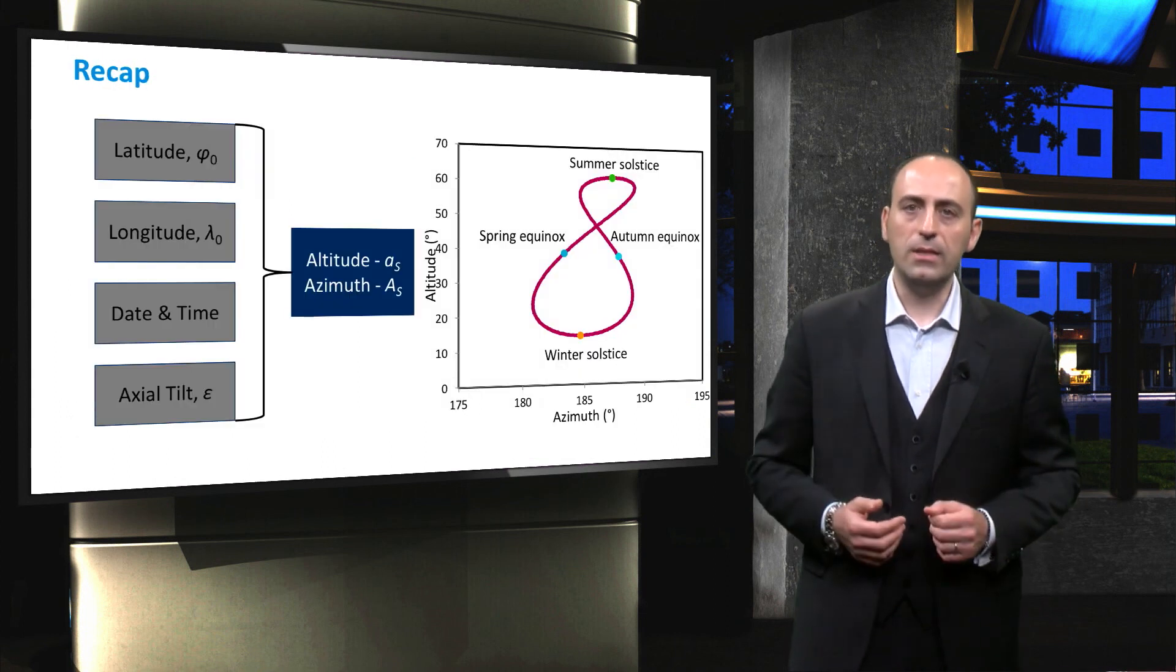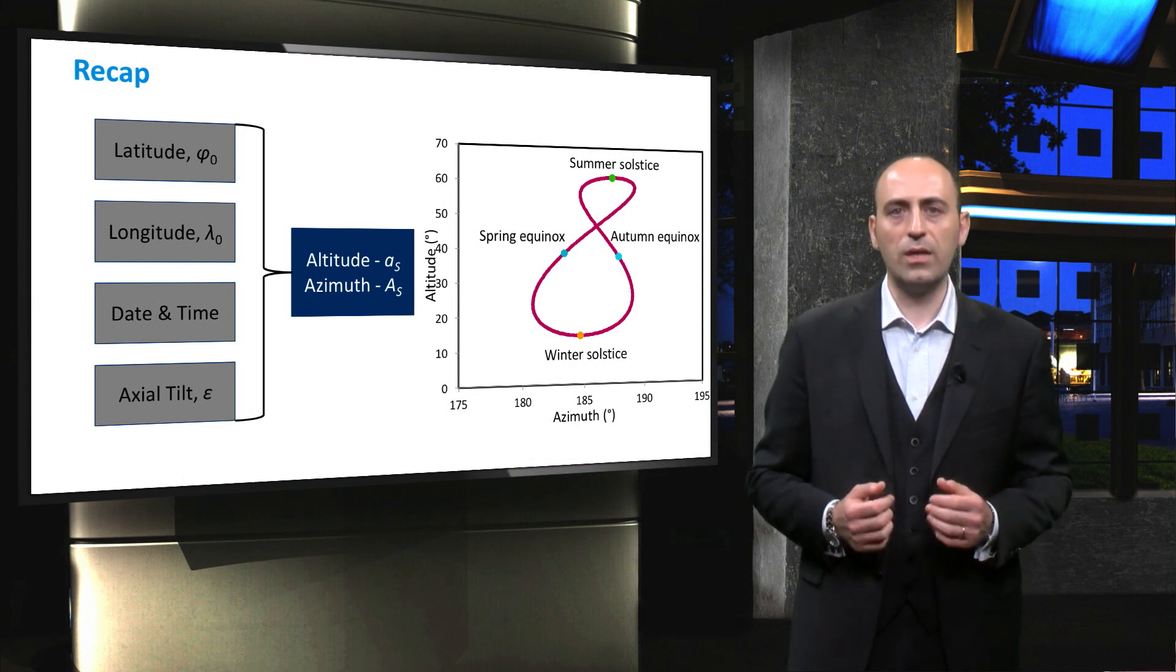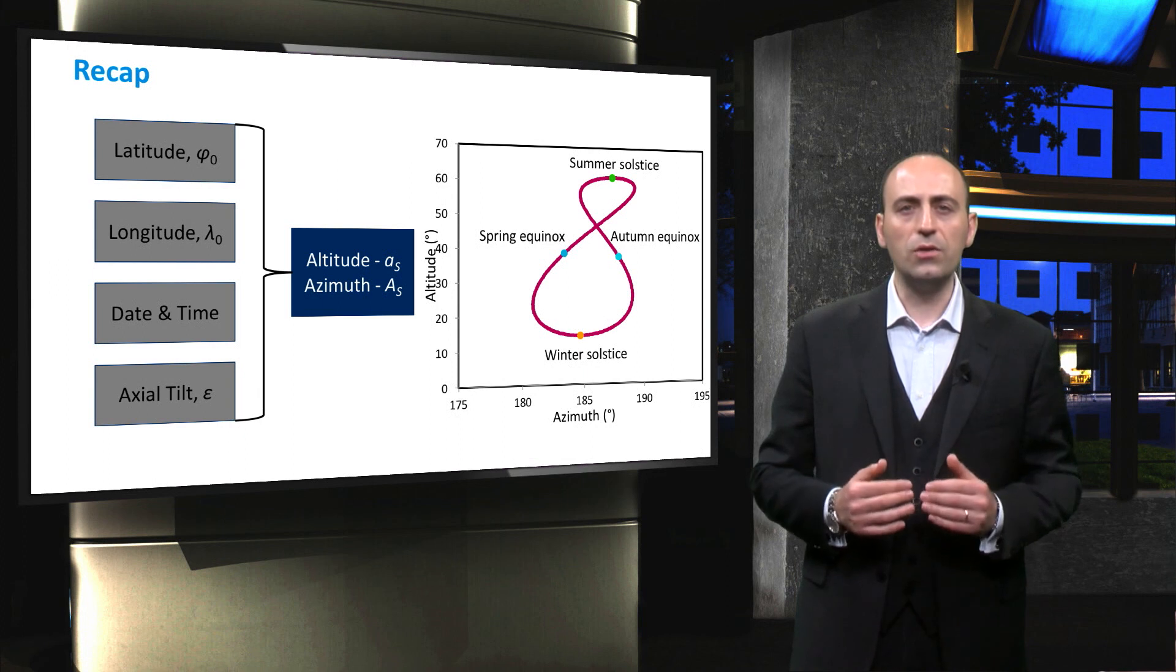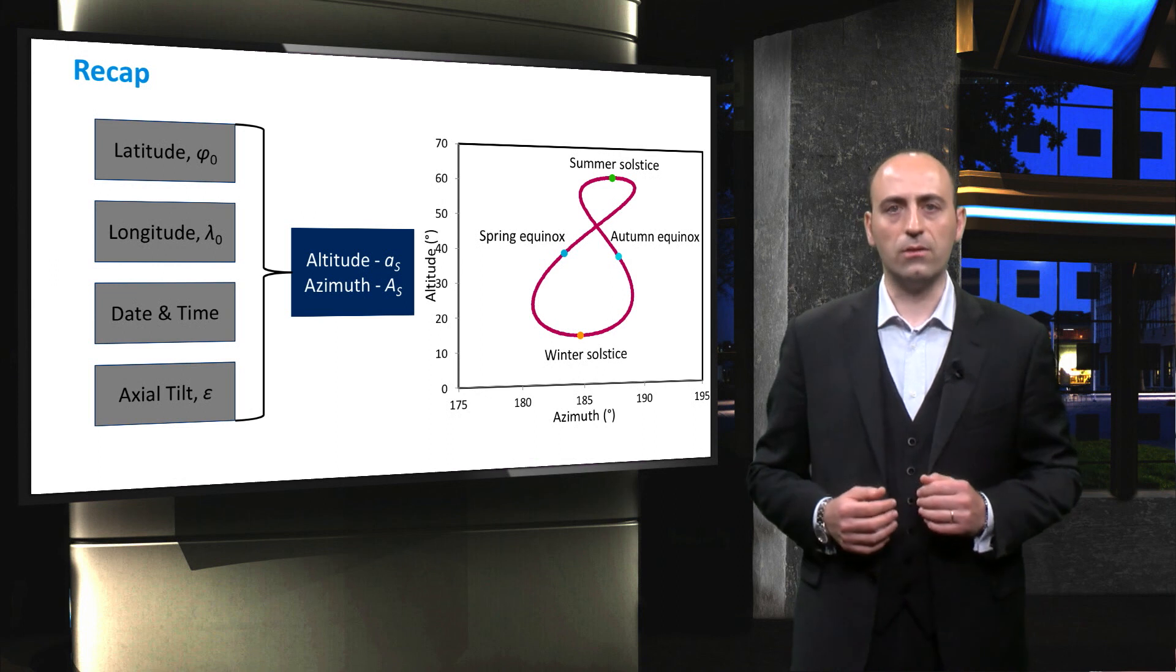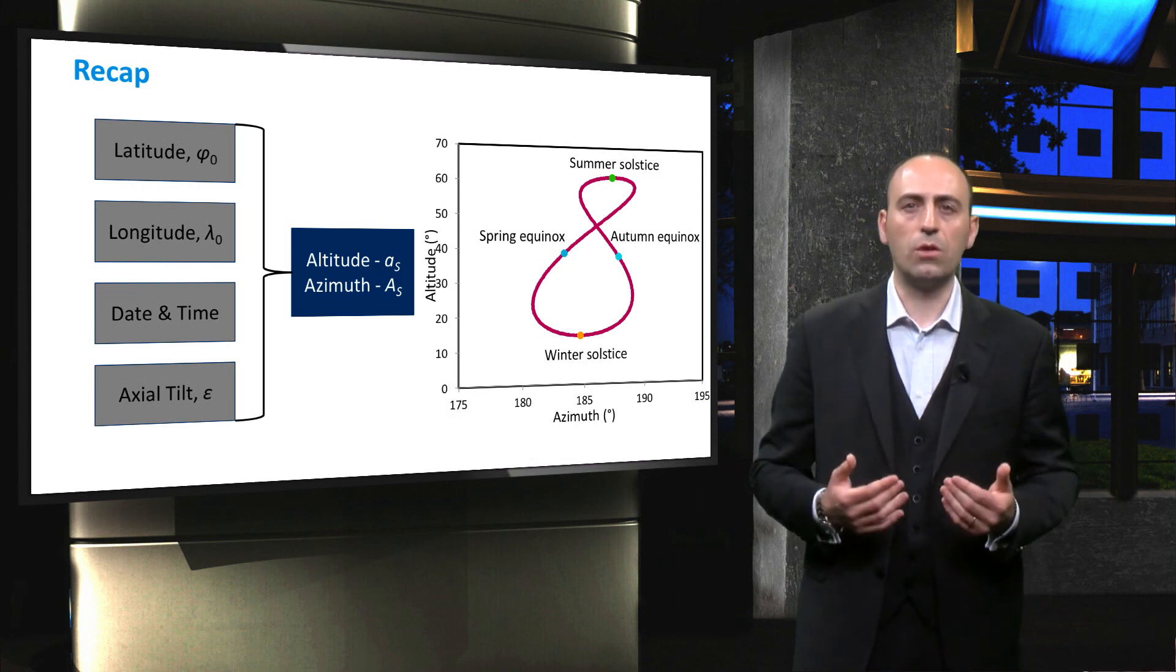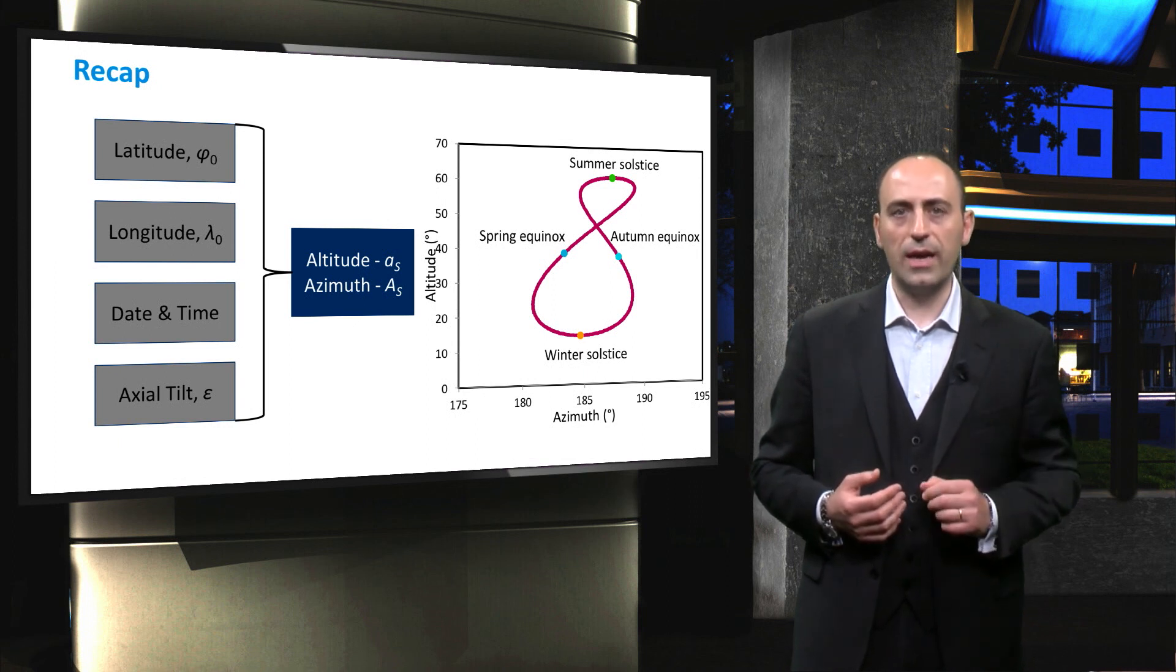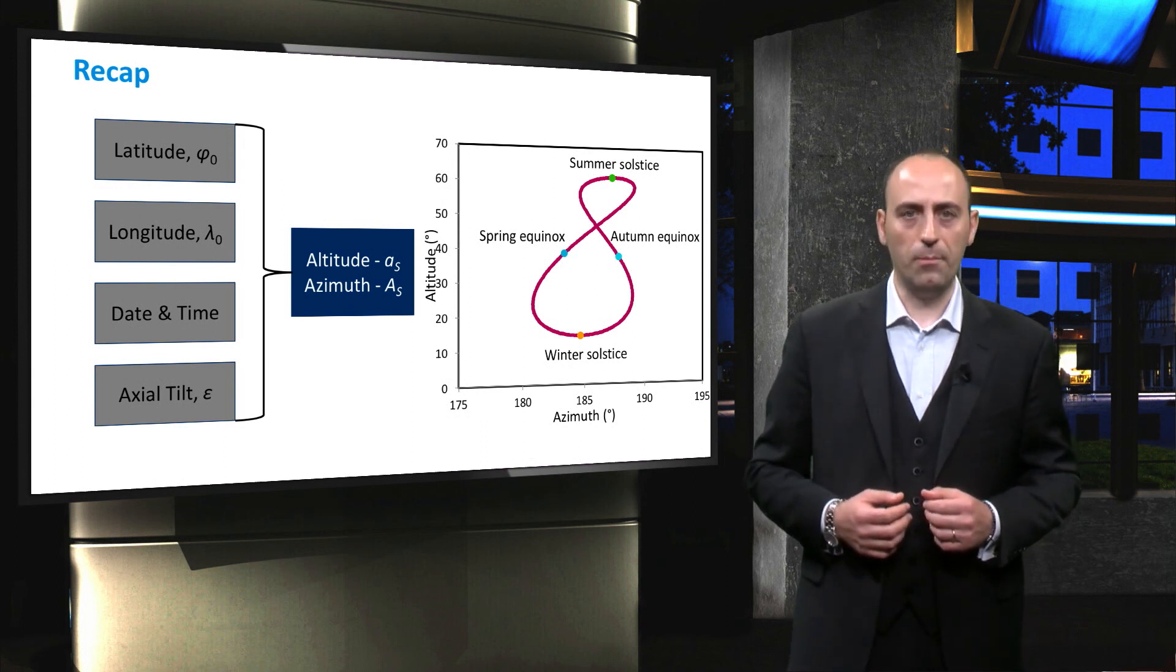To recap, in this lecture we have seen how to calculate the solar altitude and azimuth as seen from an observer, the PV module in our case, starting from the coordinates of the location, the date, the time, and the axial tilt angle. Then, we use the Sun coordinates to see the position of the Sun in the sky at a particular hour, noon in this case, for the whole year, and the output is this figure-eight shaped curve called analemma.